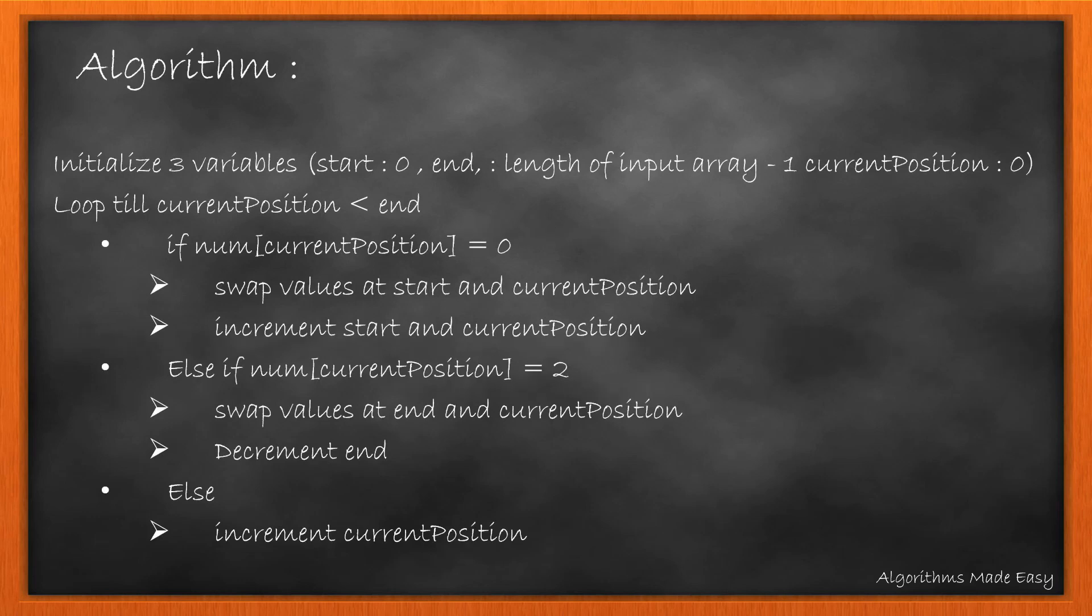We will initialize three variables: start, end, and current position. We will loop till the current position is less than the end. If the value at current position is 0, we swap the values at start and current position and also increment the start and current position.